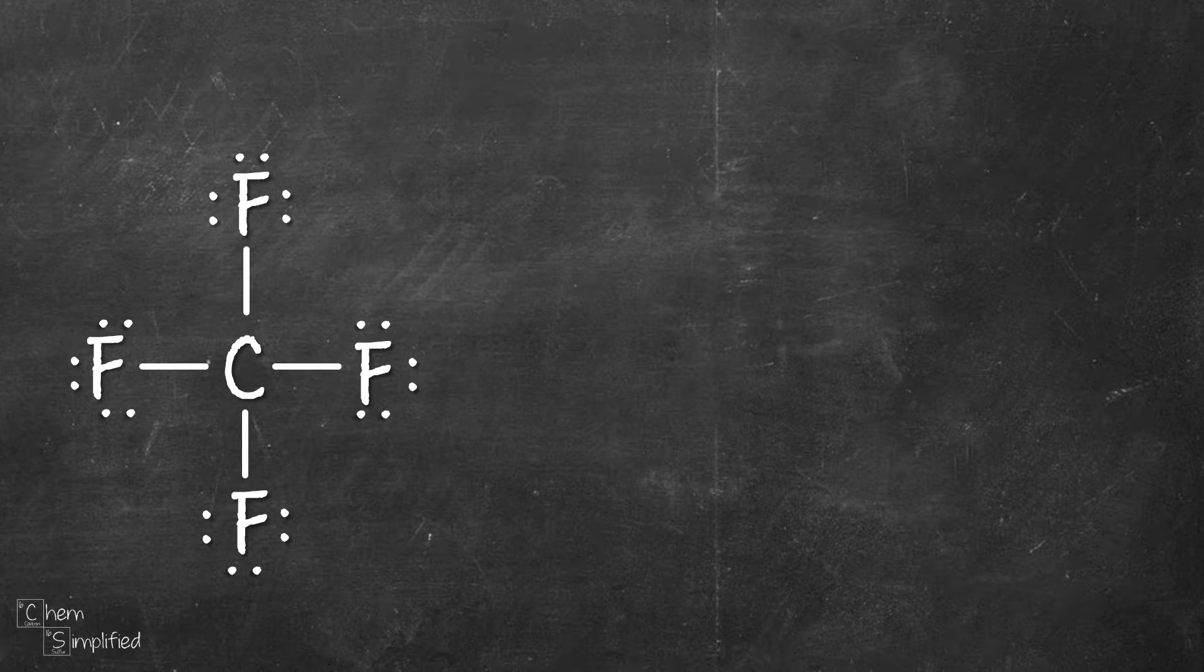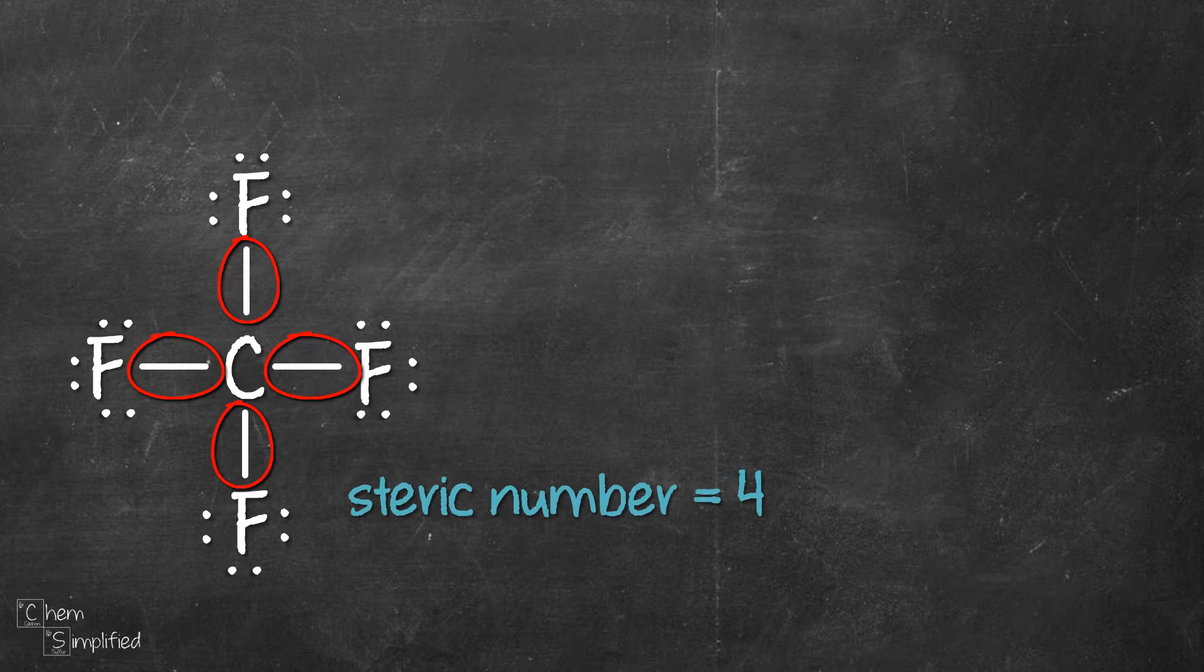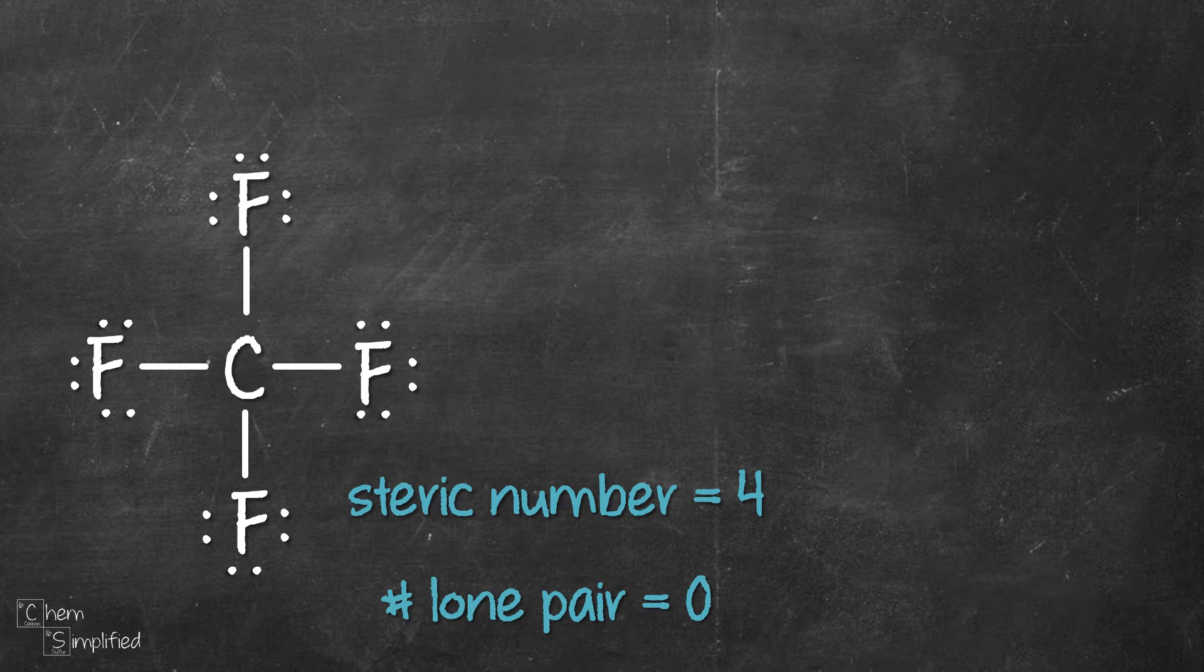Next is CF4. Carbon is the central atom, and if we look at CF4, we see four groups connected to it, so the steric number is 4. There's no lone pair on carbon, so lone pair is 0.